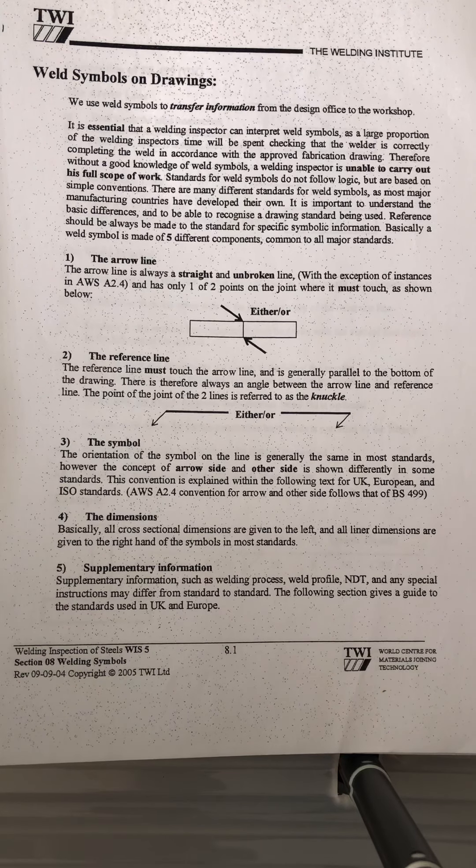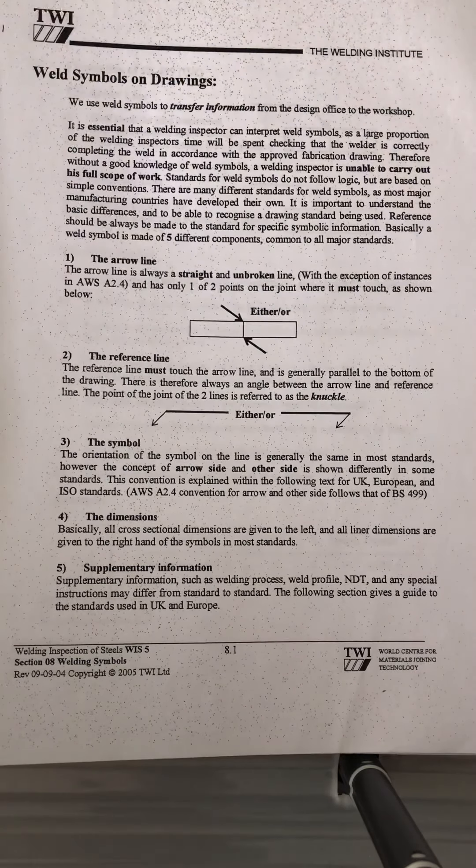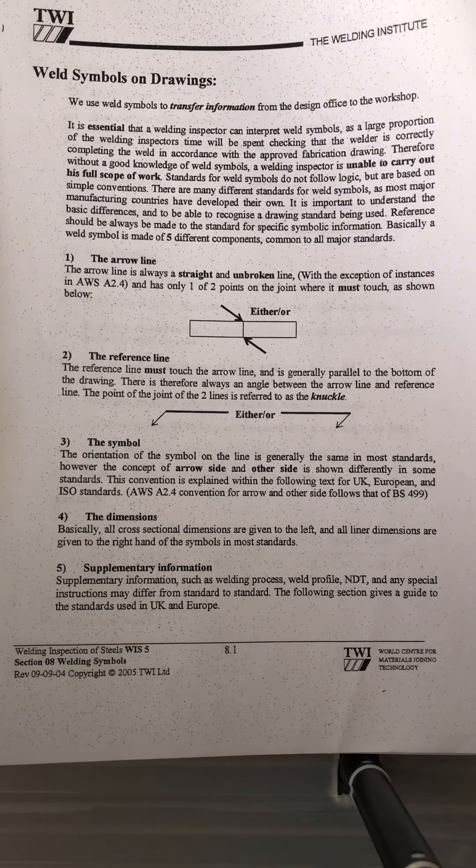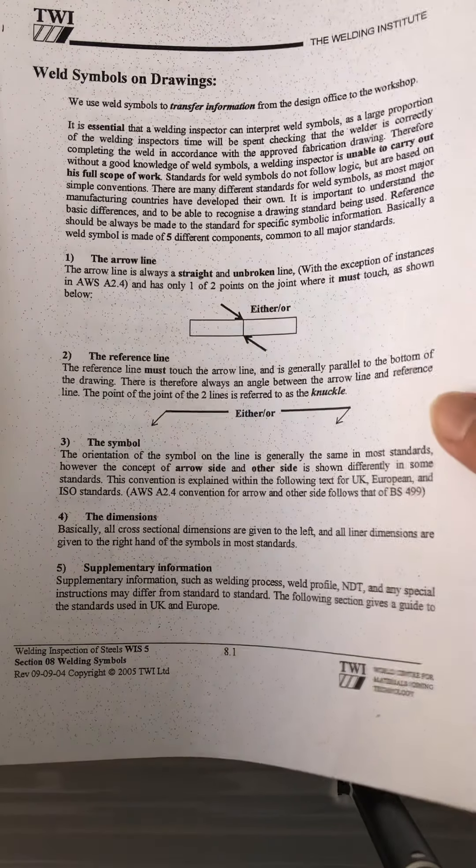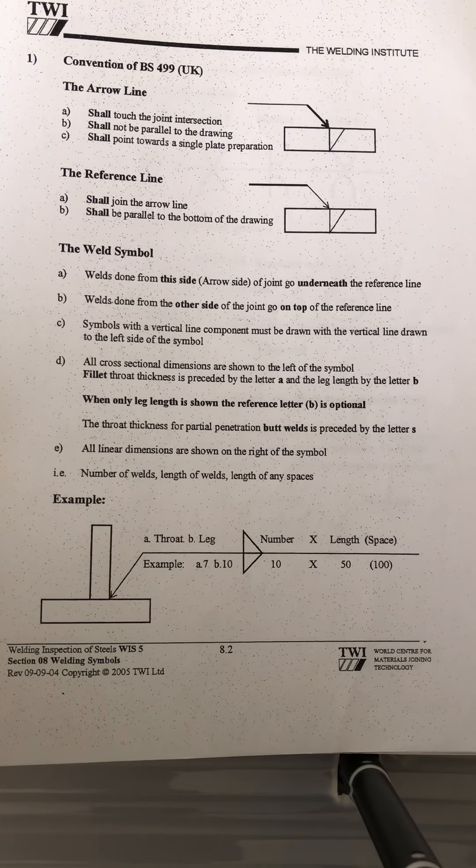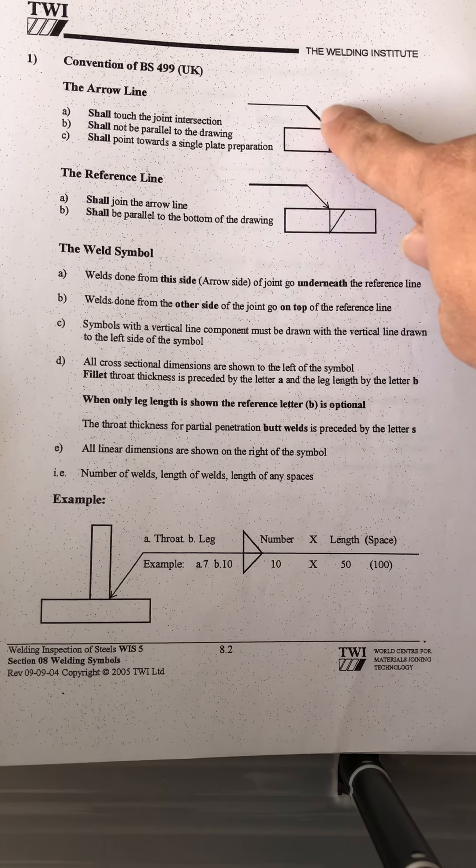As a welder and as a fitter, you can just take a photo of that one. Later I'm going to show you the welding symbols. This one is from the Welding Institute. If you see the arrow from the top, that is the arrow and the arrow line. The other one is the reference line. See the difference - bold line and normal lines.